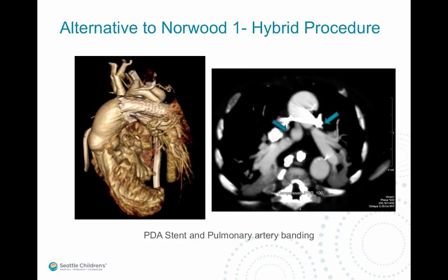An alternative to the Norwood stage 1 procedure is a procedure called the Hybrid, in which a large metal stent is placed in the PDA to keep it open, and the branch pulmonary arteries are banded so that there is more shunting of blood from the pulmonary arterial system into the systemic circulation.